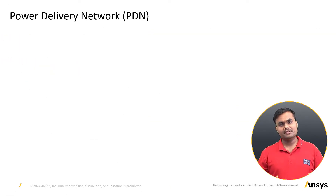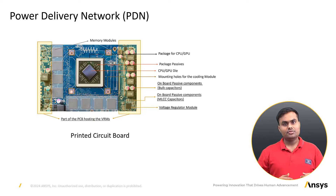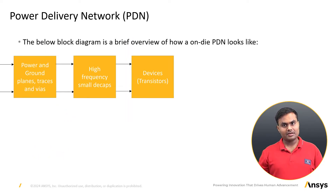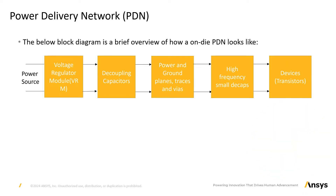Just as we discussed the power delivery network for supplying power to our homes, we similarly need a power delivery network to provide power to device transistors. On a printed circuit board (PCB), to provide power to a SoC, we have different PDNs at different stages — for example, a PDN at the PCB or system level, and a PDN at the on-die level. The following block diagram provides a brief overview of how a typical PDN looks.